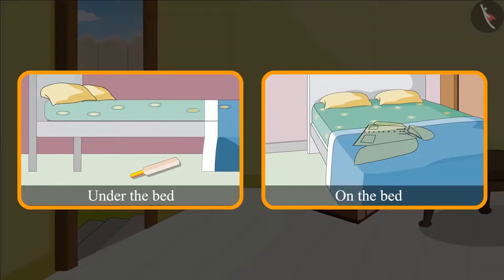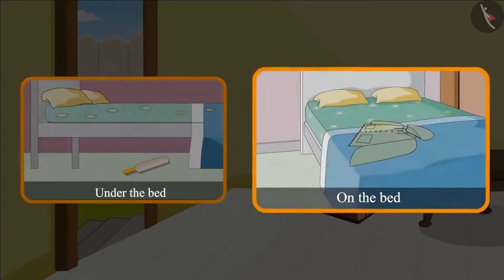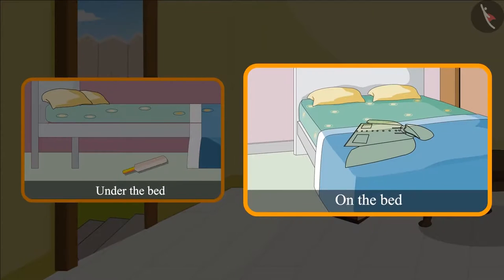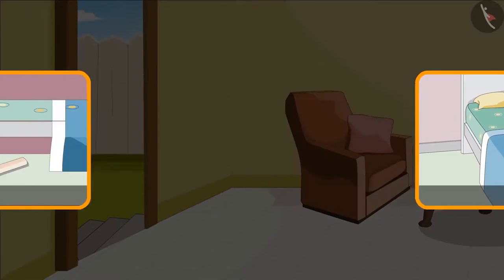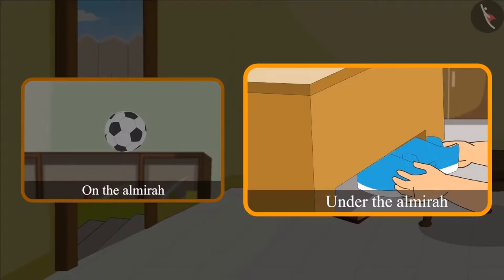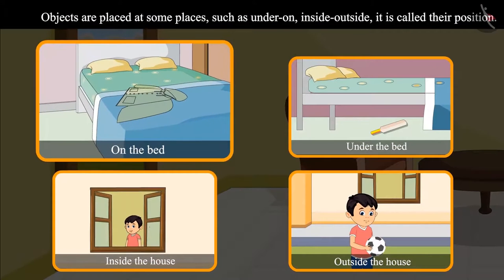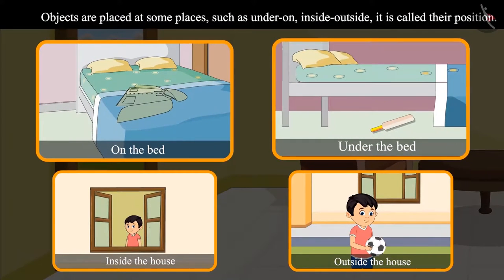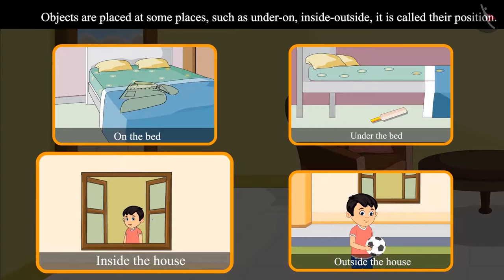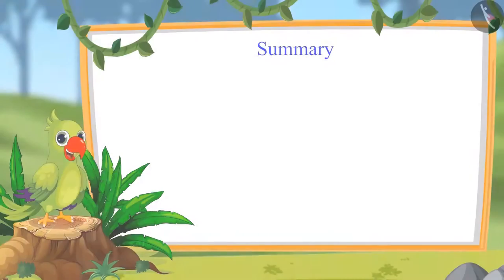Children, did you see where Chotu's bag was kept? Chotu's bag was kept under the bed, and his raincoat was kept on the bed. Chotu's mother took the ball which was kept on top of the almira, and Chotu's shoes were under the almira. So children, we have seen that objects are usually kept at certain places, and words such as under, on, inside, and outside are used to exactly tell us their position.